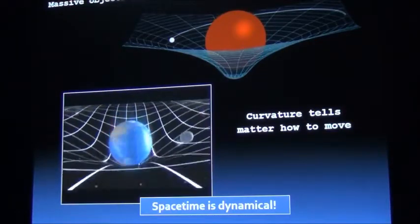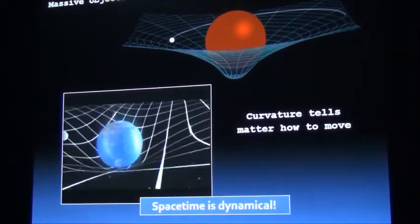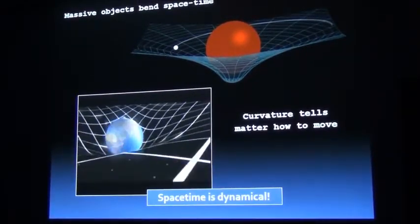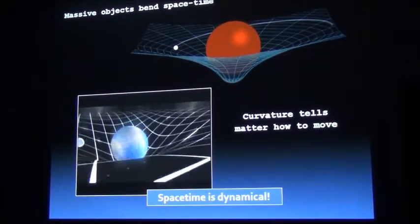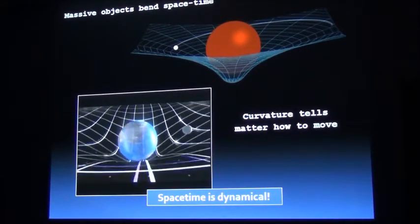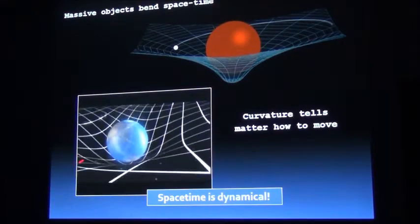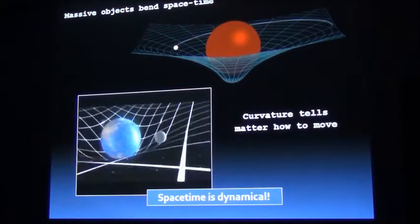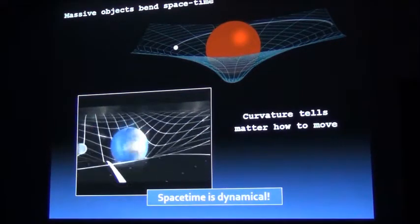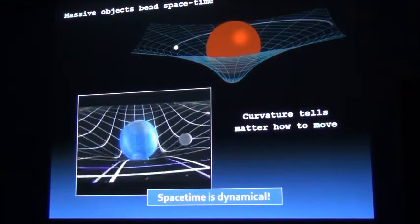Another idea that came out of general relativity is that space-time is dynamical. As these massive objects are moving around, the curvature of space-time itself is constantly changing and moving. All these objects move depending on the way in which that curvature is changing as time goes by — all these different massive objects are talking to each other and responding to that bending of the fabric of space-time.